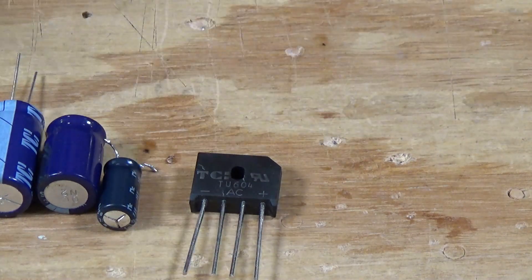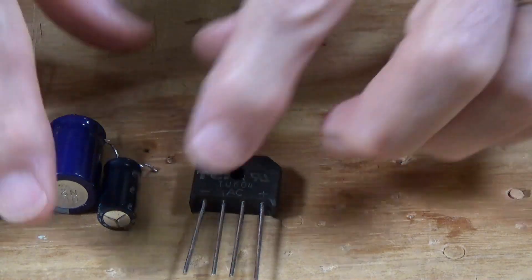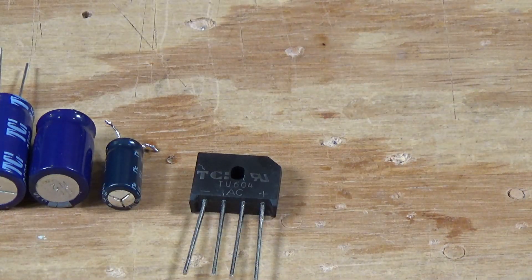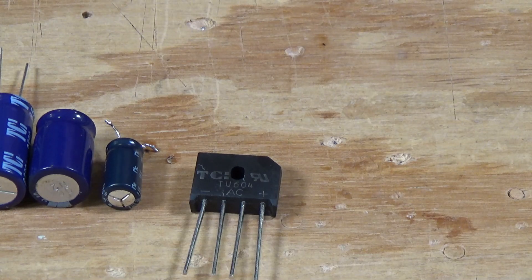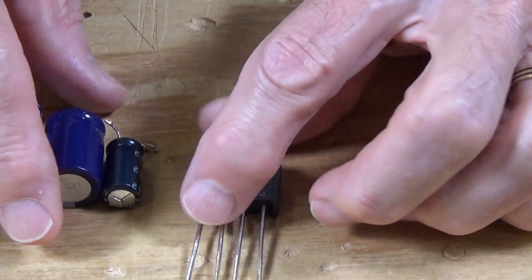And I'll give you a list in the description of all of these components. And you can get them at all electronics. You can get them from Jameco. You can get them from DigiKey. You can get them from Mouser. And like I said, I'll put that in the description.